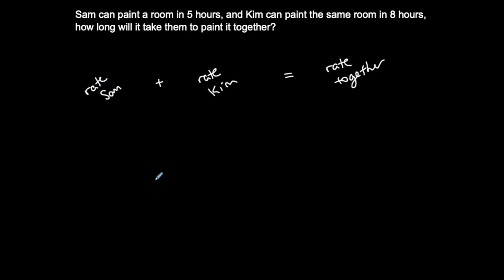Now I need to convert it into a numerical step, right? Sam can paint a room in five hours. It takes her, so she could do one job in five hours. This is the rate at which she does this job. This is the rate at which she paints this room. She does this one job in five hours.